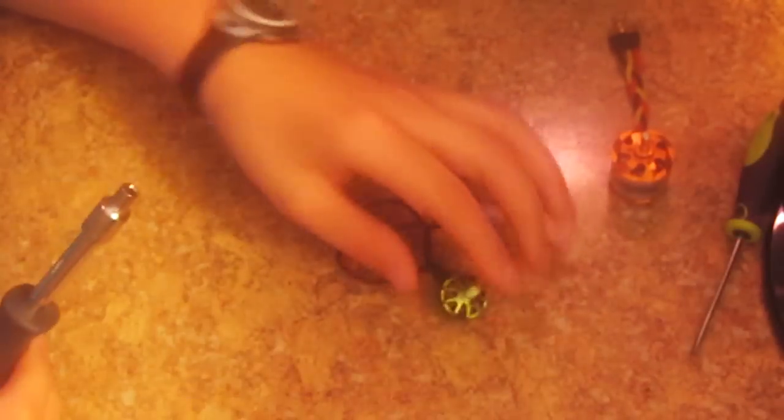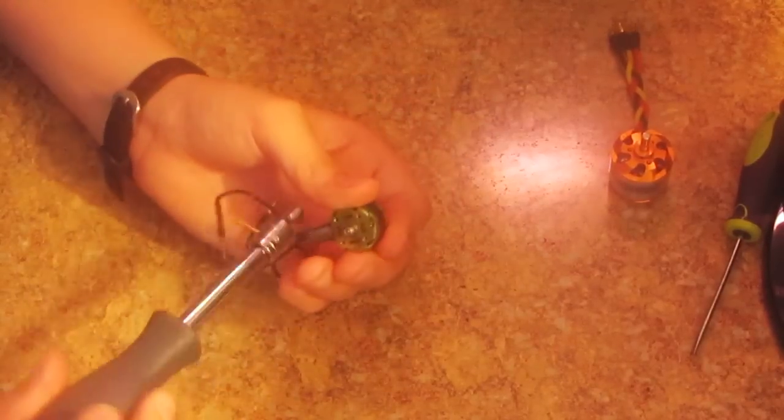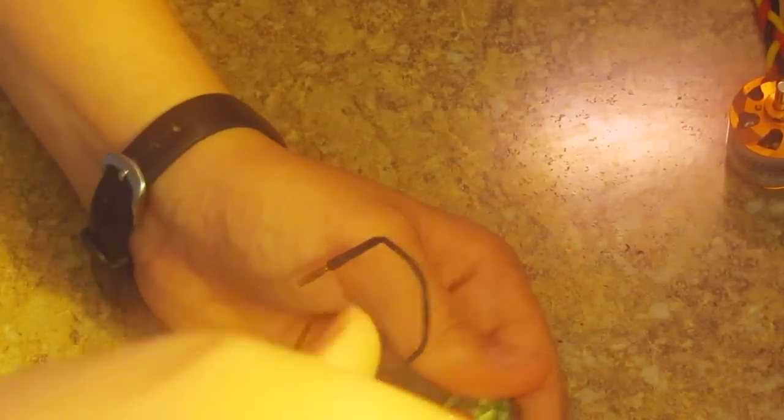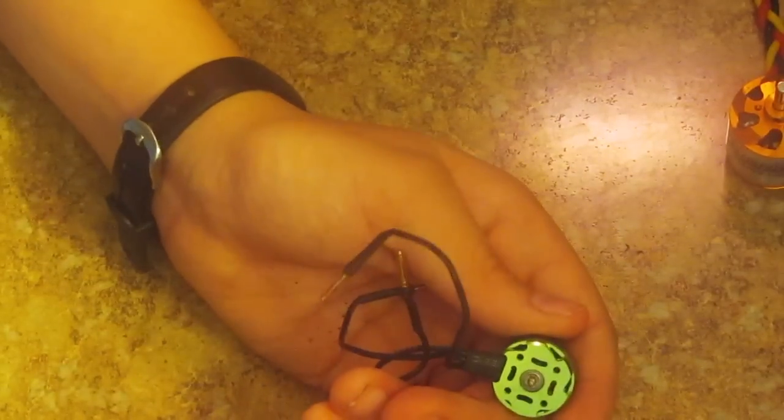For the socket, this is a four millimeter socket. Just take this to the bottom and you're going to want to unscrew this. It's pretty easy. They don't keep these on really tight. They don't Loctite them or anything. Then that bolt just comes off. You'll want to save that.